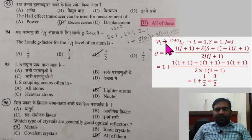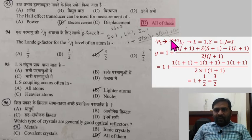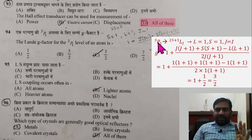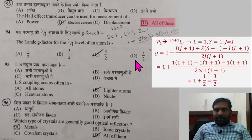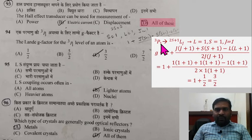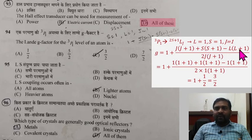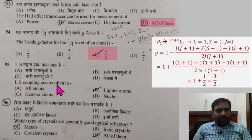Question 94: The Landé g-factor for the 3P₁ level. The spectral term notation is (2S+1)LJ. Here: 2S+1 = 3 so S = 1; L = 1 (for P); J = 1. The Landé g-factor formula is g = 1 + [J(J+1) + S(S+1) − L(L+1)] / [2J(J+1)]. Substituting: 1 + [1×2 + 1×2 − 1×2] / [2×1×2] = 1 + [2+2−2]/4 = 1 + 2/4 = 3/2. The answer is 3/2.